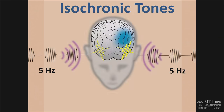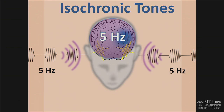An isochronic tone is a single tone that turns on and off in a particular pattern matching the desired frequency. It is very effective because the tone is not heard at all during the pauses, though accompanying music may provide a background. The contrast between on and off is very high, inducing a strong neural response — compared to binaural beats where you hear a continuous fluctuating sound, isochronic beats produce sound at distinct time intervals. Some people compare it to the sound of a helicopter.